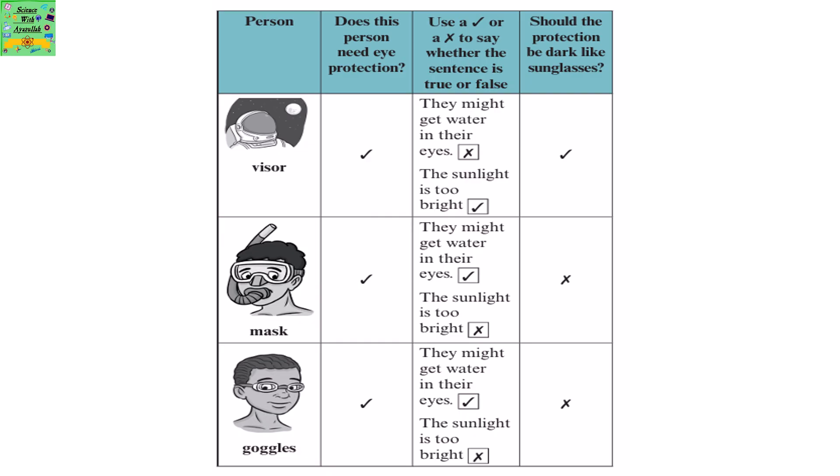Does the person who wears a visor need eye protection? Use a tick or cross to say whether the sentence is true or false. They might get water in their eyes — false. The sunlight is too bright — true. So should the protection be dark like sunglasses? Yes, it needs to be.